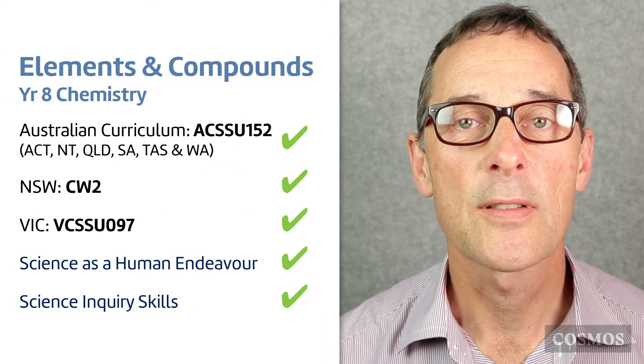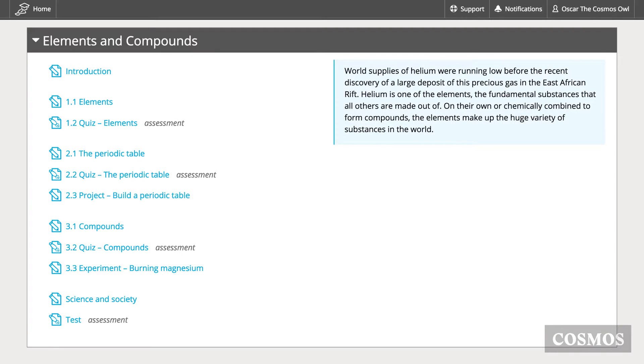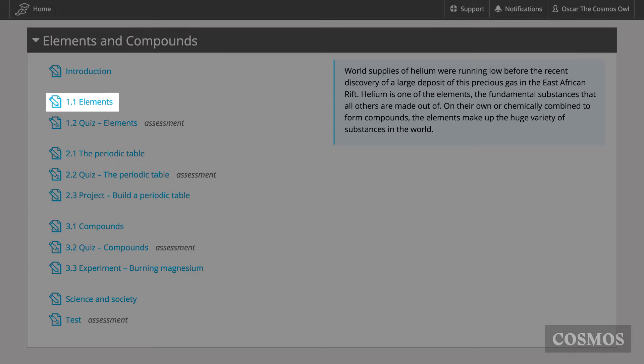As usual, it neatly covers the curriculum requirements. The unit has three lessons. In the first, we introduce atoms and elements. The second looks at the periodic table with just a little bit of history. And in the third, it's compounds.